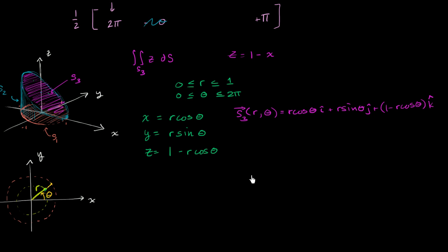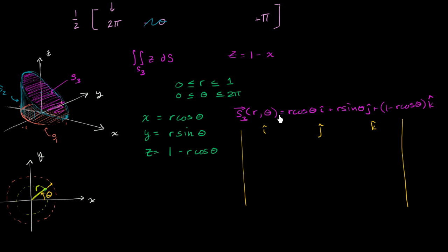The first thing we need to do is take the cross product of the partial of S3 with respect to r and the partial with respect to θ. Taking the partial with respect to r: the i-component is cosine θ, the j-component is sine θ, and the k-component (from 1 minus r cosine θ) is negative cosine θ.